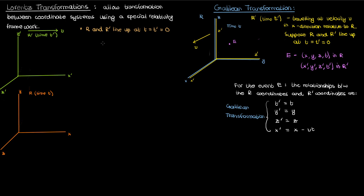Let's start with the easiest equations. Between the reference frames there's no relative motion in the y or z direction, so the y and z remain equal to their prime counterparts. The reference frames are fully lined up at the start and the origin of r' only travels in the x direction relative to r, therefore y' equals y and z' equals z.